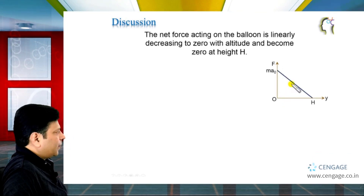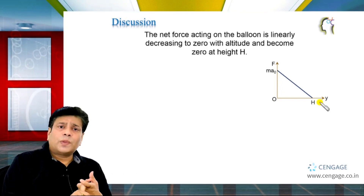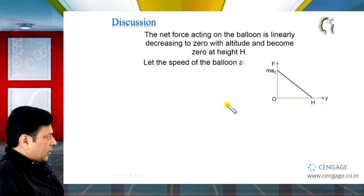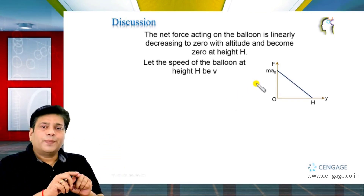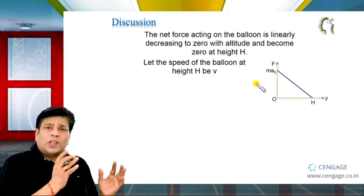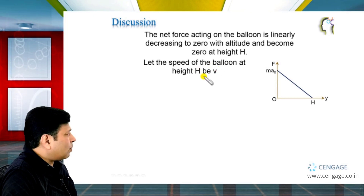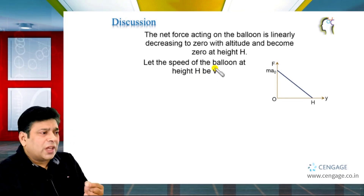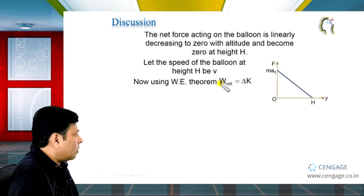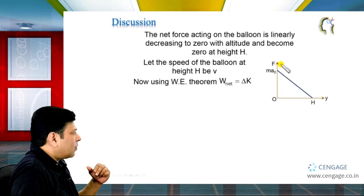Let us plot the net force on the y-axis and height on the x-axis. Let us assume the velocity of the balloon at height H is equal to V. If we consider the balloon as our system, the net force acting on it is in the upward direction — this net force includes the resultant of gravity and buoyant force. Because of this net force, the speed of the balloon is increasing from 0 at ground level. Here we can apply the work-energy theorem: work done by all forces equals change in kinetic energy, so W_net = ΔKE. This W_net can be calculated from the graph, as work done equals the area under the force-displacement graph.